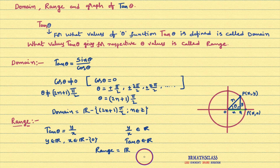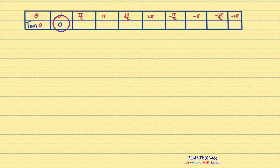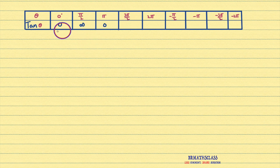Now we will try to learn the graph of tan function. I consider some theta values: 0 degrees, pi by 2, pi, 3pi by 2, 2pi, minus pi by 2, minus pi, minus 3pi by 2, minus 2pi. From the trigonometry table we know all these values. Tan 0 degrees is 0. Tan pi by 2 — whenever theta is odd multiple of pi by 2, tan theta is not defined — so tan pi by 2 is not defined. Tan pi value is 0. Tan 3pi by 2 is not defined. Tan 2pi value is 0.